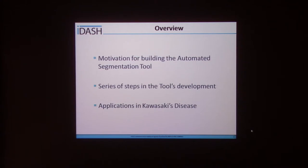In this presentation we will discuss the motivation behind building the automated segmentation tool for ventricles, the series of steps that were undertaken to build it, and most importantly its application in obtaining data for Kawasaki's disease, which is an autoimmune disorder with a serious effect on the heart targeting mostly children under five years of age.